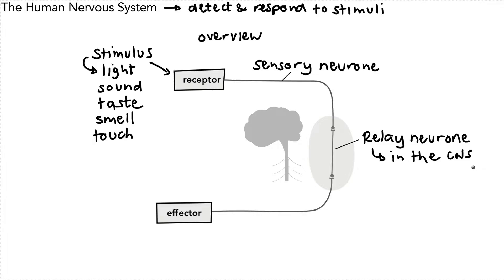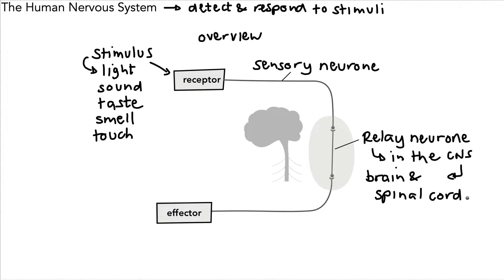That broccoli-looking thing is actually a brain and spinal cord. The relay neuron is in the central nervous system, and the central nervous system is made up of the brain and the spinal cord. Here is the diagram of the brain and the spinal cord that I was just talking about.